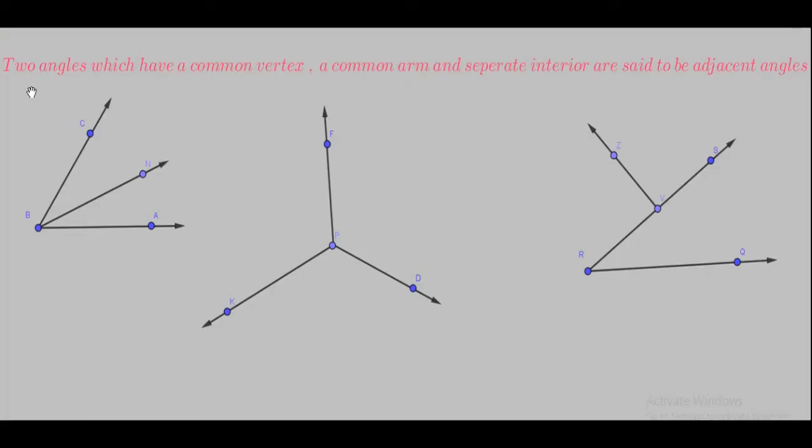Now we are going to see adjacent angles. Two angles which have a common vertex, a common arm, and separate interiors are said to be adjacent angles. For example, angle CBA and angle NBA have common vertex B, common arm BN, and separate interiors. So the conditions are satisfied.